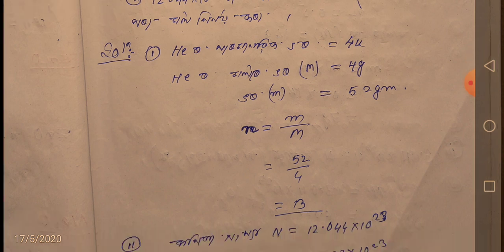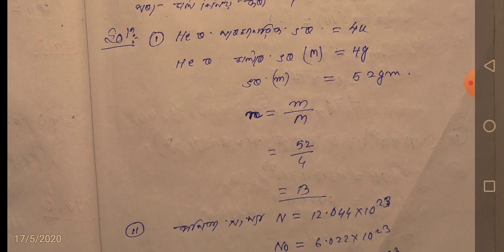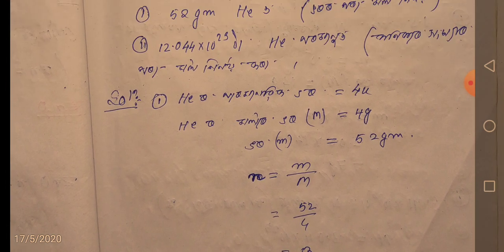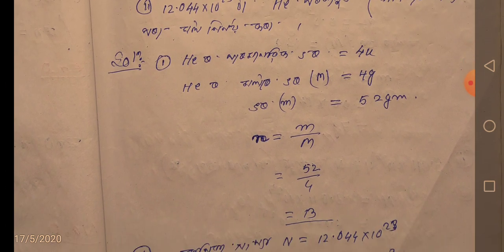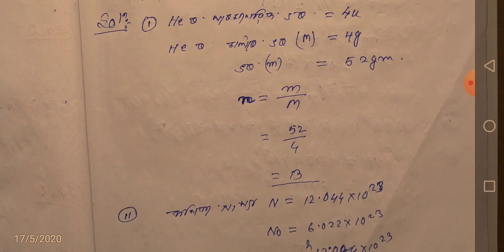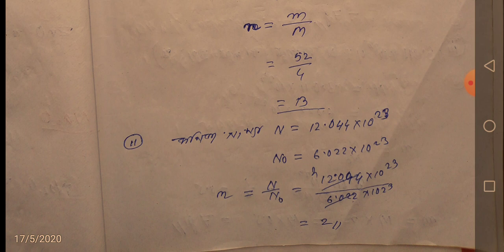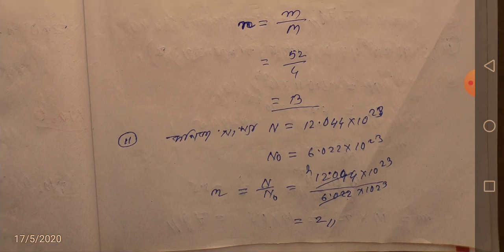52 by 4 equals 13. That is my answer. I will write small m, so n equals 13 moles.